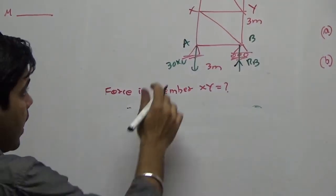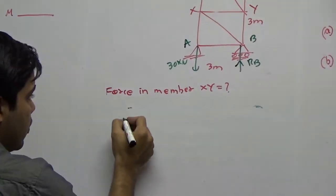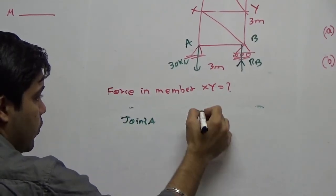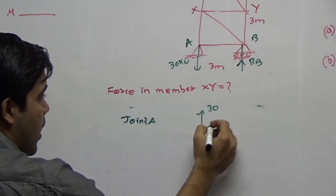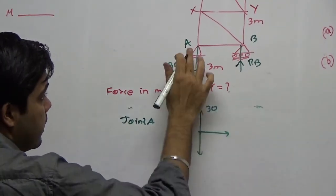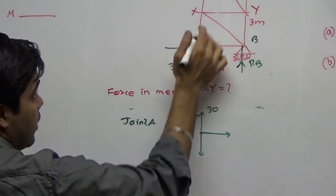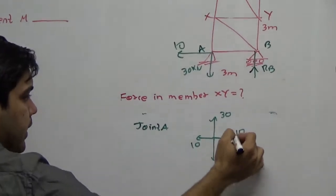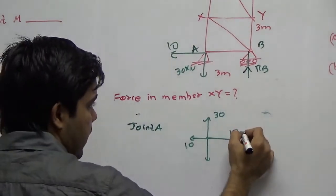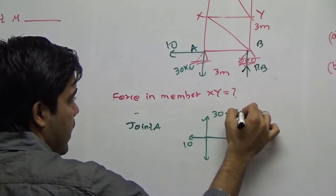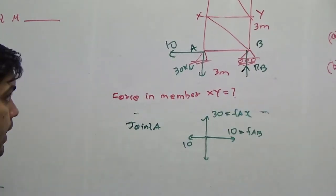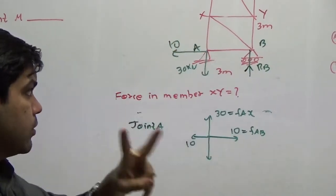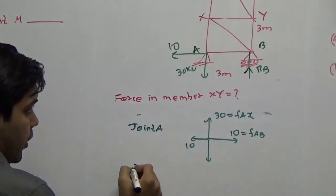The next step is to find the force in member XY. Considering joint A: since rA is 30 kN downward, FAX must be 30 kN upward, and FAB is 10 kN. However, joint A still has 3 unknowns, so as per method of joints — which requires a maximum of 2 unknowns — I move to joint B instead.